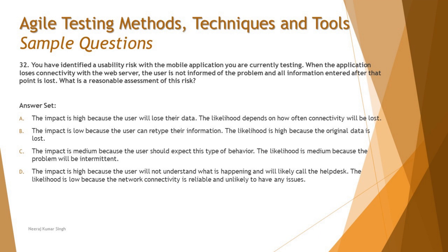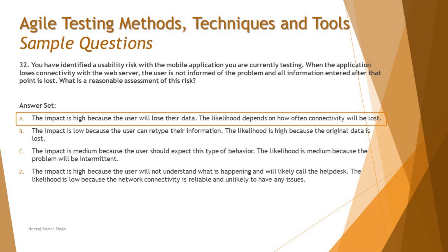Option D says: the impact is high because the user will not understand what is happening and will likely call the help desk; the likelihood is low because network connectivity is reliable and unlikely to have issues. Again, declaring likelihood as low based on assumed reliability is more of a prerequisite assumption than a tested likelihood. The right answer is A: the impact is high because the user will lose their data, and the likelihood depends on how often connectivity will be lost — which we don't have insights on yet.